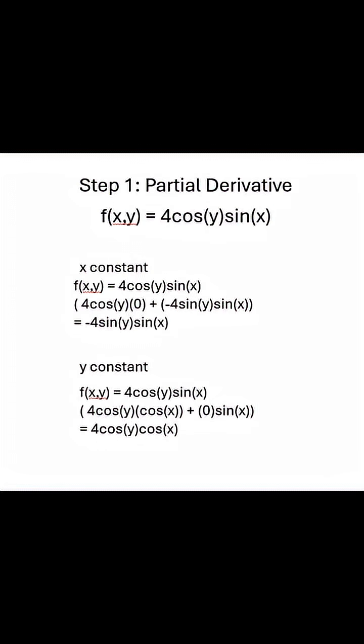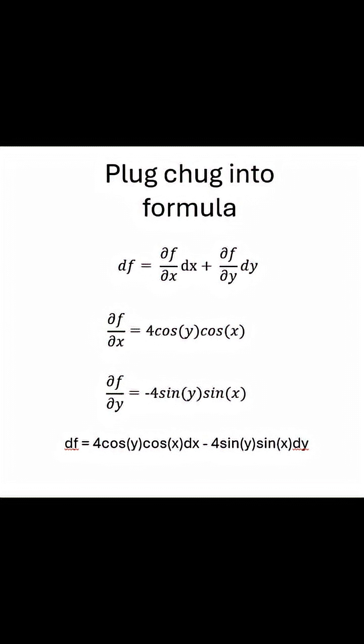First step: partial derivative with x constant, y constant, you know how this goes. We're going to plug into this formula, and this is how we get 4cos(y)cos(x)dx minus 4sin(y)sin(x)dy.